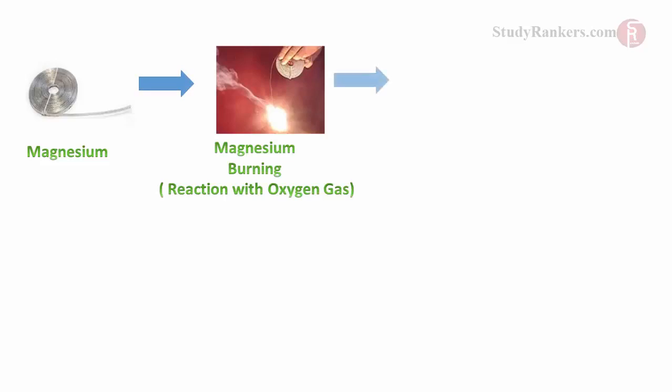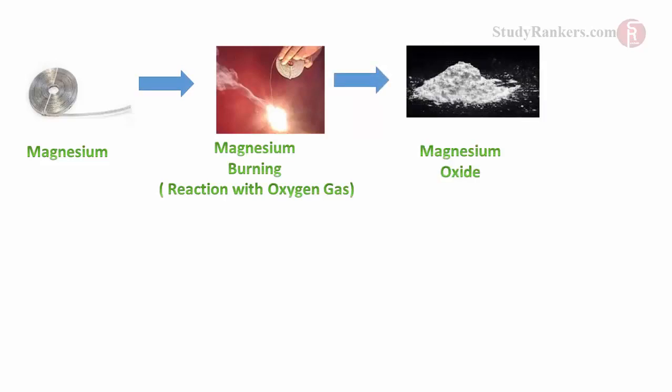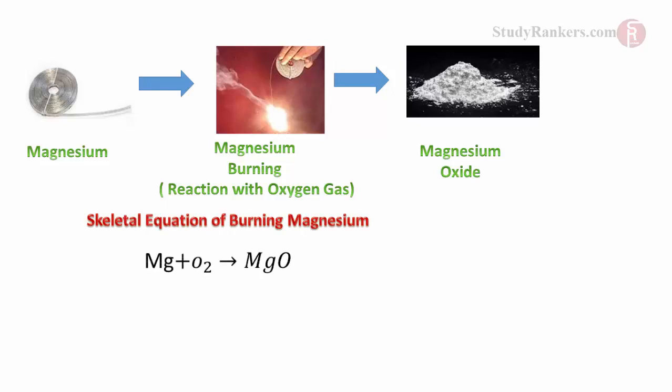Now we will understand how to write a chemical equation. Here is a chemical reaction taking place: magnesium is burning in the presence of oxygen and gives a white powder named magnesium oxide. Mg is the symbol of magnesium and O2 is the symbol of oxygen gas — both are reactants. The product of the reaction is magnesium oxide, MgO, a white powder. So this is the skeletal equation.